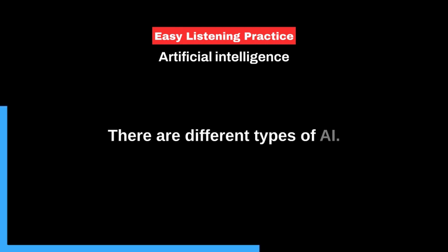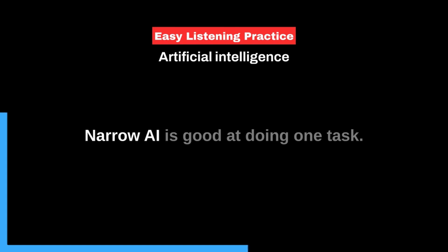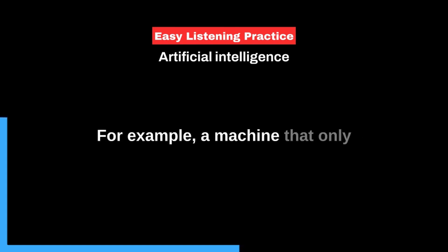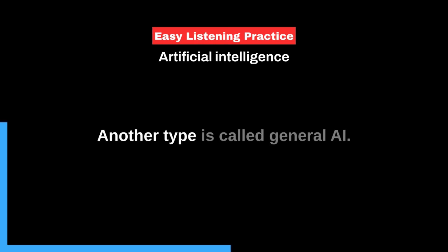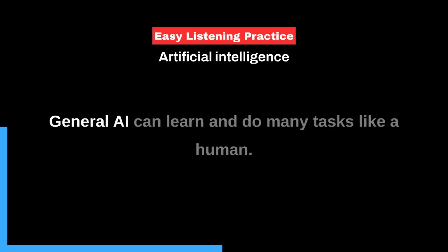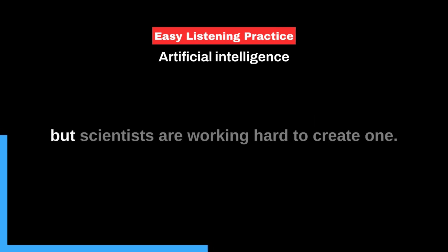There are different types of AI. One type is called narrow AI. Narrow AI is good at doing one task. For example, a machine that only plays chess is a narrow AI. Another type is called general AI. General AI can learn and do many tasks like a human. We have not made a general AI yet, but scientists are working hard to create one.